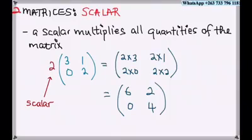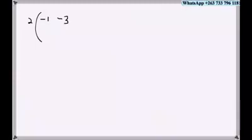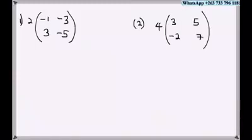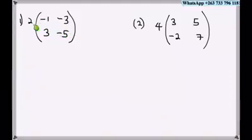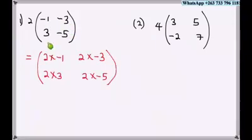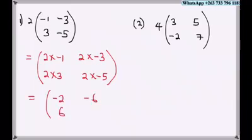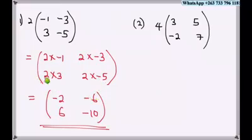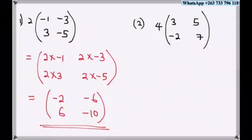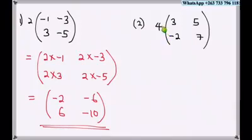Let's look at another example. We have a scalar of two and a matrix containing one, minus one, three, minus three, minus five. Two will multiply everything: two times minus one, two times minus three, two times three, two times minus five. The final answer becomes minus two, minus six, six, minus ten.